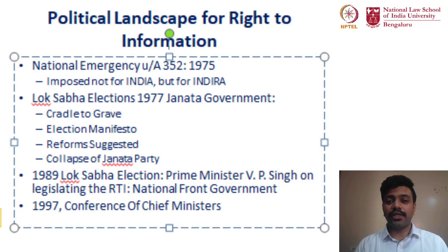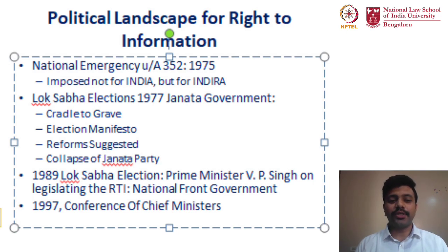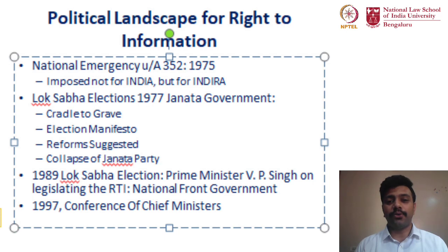This takes us back approximately 45 years to the era of emergency that was imposed in June 1975, which lasted for about a 21-month period until March 1977. It is important to note that this was a state of emergency imposed not for India, but for Indira. It was an outcome of a decision of the Allahabad High Court, wherein certain information relating to campaigning and financial aspects of the then government was ordered to be disclosed. More details on this case will be discussed later in the case studies.